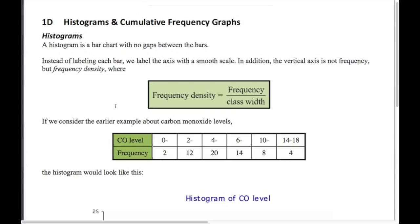Frequency density is frequency divided by the class width — this is way important. If we go back to the example we've been using in the other videos about the carbon monoxide levels over a number of days, if we just draw the histogram using frequency, this is what we get.